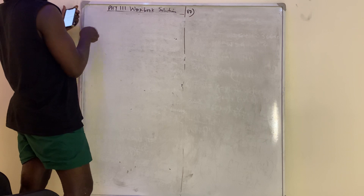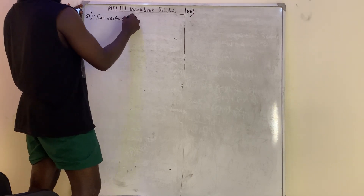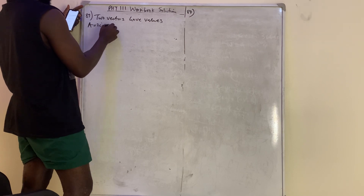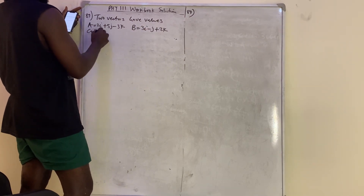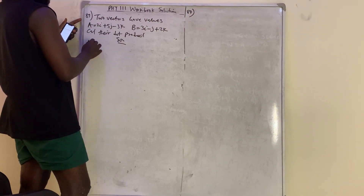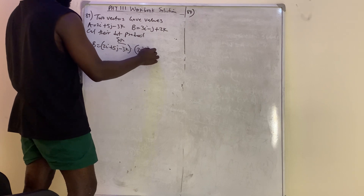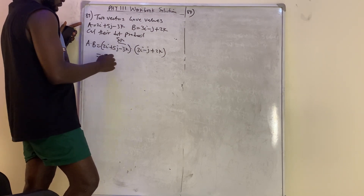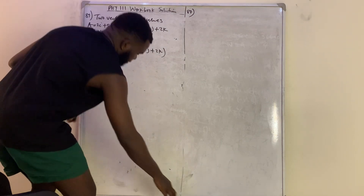Question number 89: two vectors have values a equals 2i plus 5j minus 3k and b equals 3i minus j plus 2k. Calculate the dot product. A dot b equals (2i + 5j - 3k) · (3i - j + 2k). In dot product we are interested only in magnitude, not direction: 3 times 2 is 6, 5 times minus 1 is minus 5, minus 3 times 2 is minus 6. So 6 minus 5 minus 6 gives minus 5 as the answer.